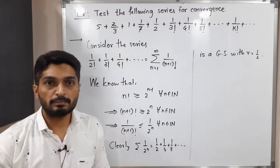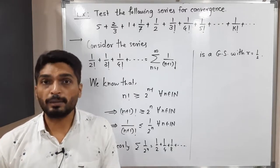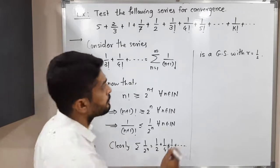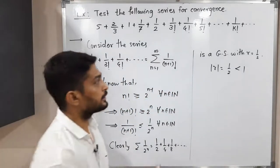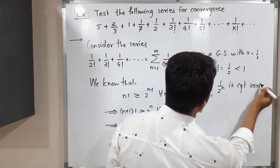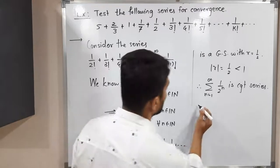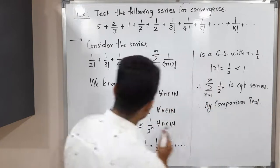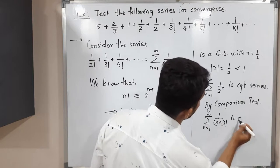We know that a geometric series with common ratio r converges if |r| < 1. Here, |r| = |1/2| = 1/2, which is less than 1. Therefore, summation of 1 upon 2 raised to n from n=1 to infinity is a convergent series. By the comparison test, the lower series — summation of 1 upon (n+1) factorial from n=1 to infinity — is also a convergent series.